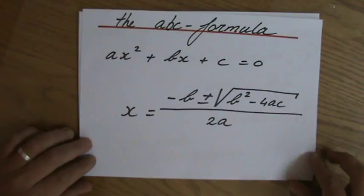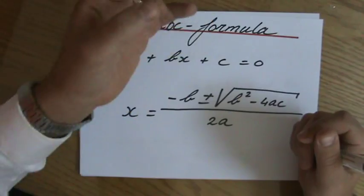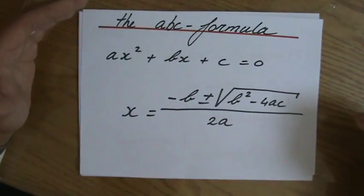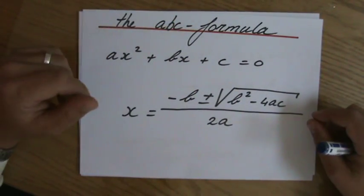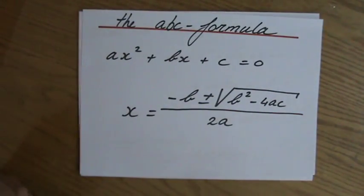Sorry, I was doing two things at the same time. So X equals minus B plus or minus the square root of B squared minus 4AC over 2A. You have to be able to kind of chant that formula yourself even when it's 3 o'clock in the night.